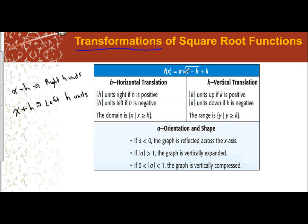Since the formula says x minus h, your h is really the opposite of what you see. The formula says plus k, so if you have a positive k value, you're going to go up k units. If you have a minus k, you're going to go down k units.